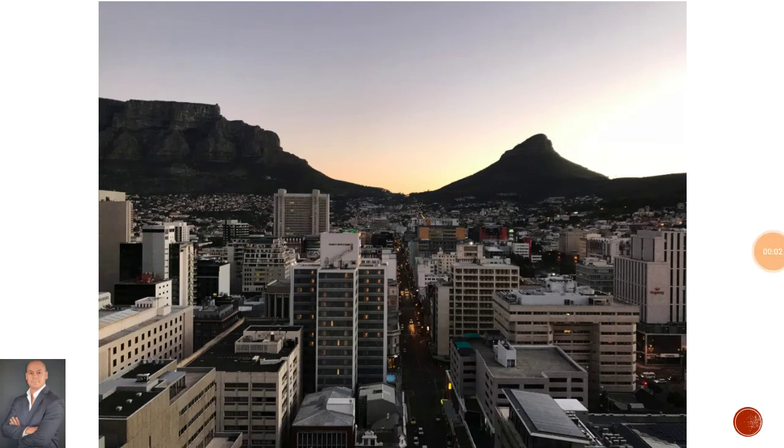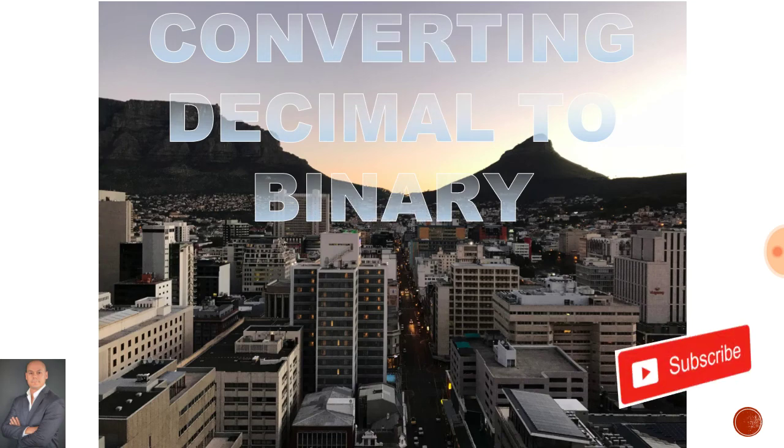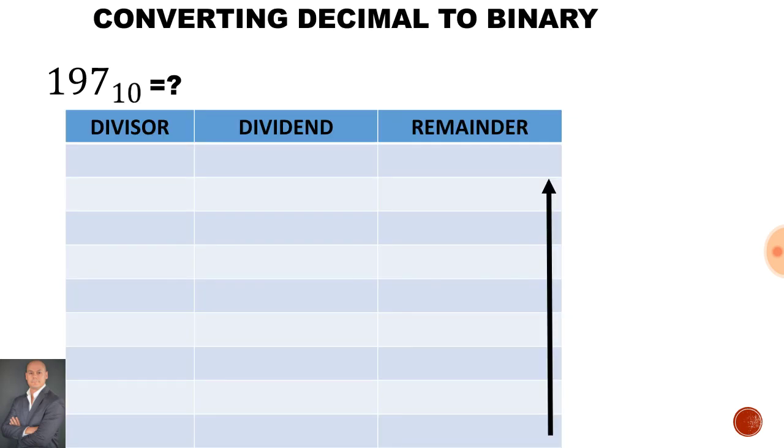Welcome back to N3 Electrode Technology. In this lesson we'll be looking at how to convert decimal into binary. The decimal number we are dealing with is 197 and we need to find the binary number for it. So how do we do this?